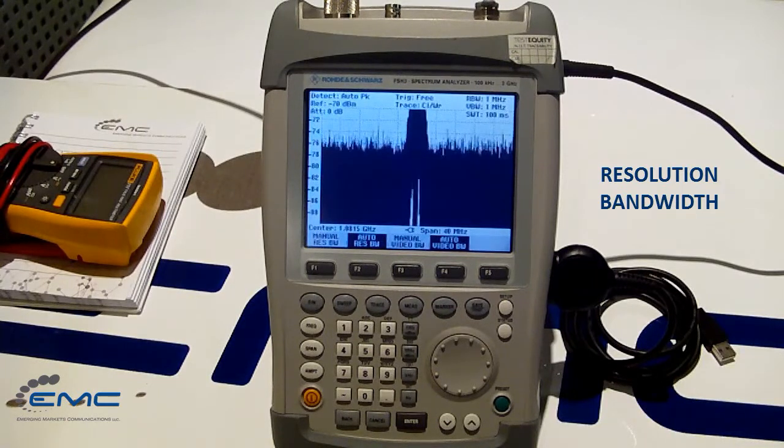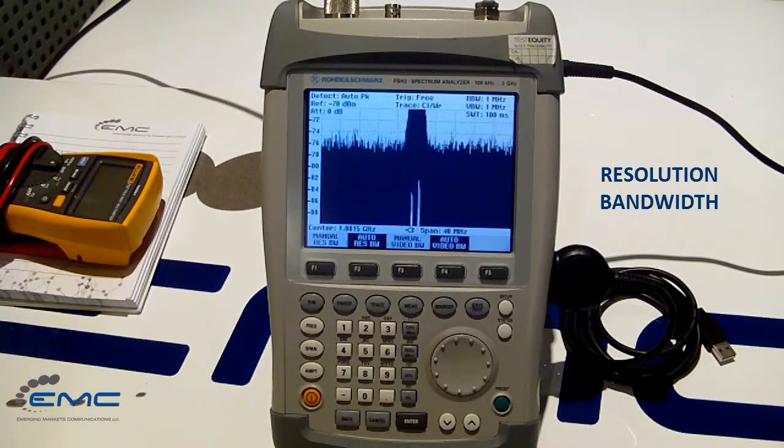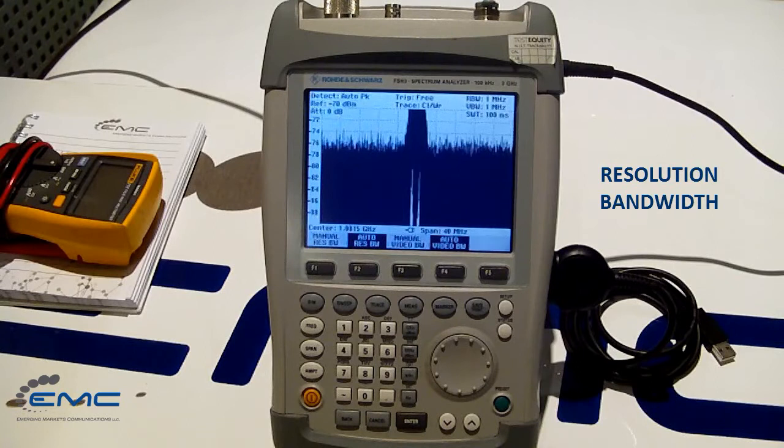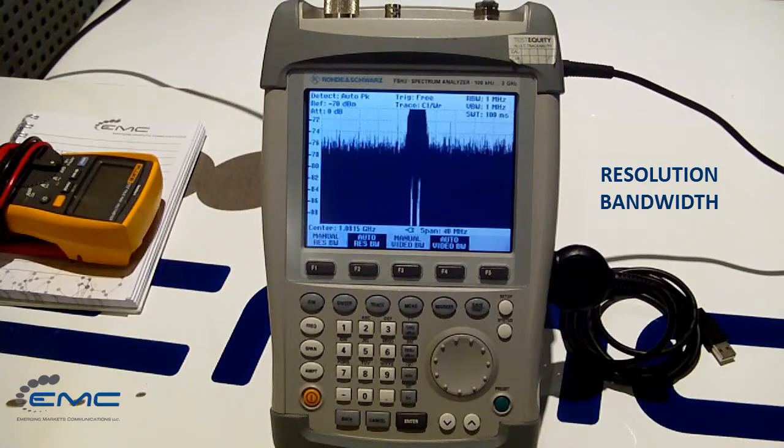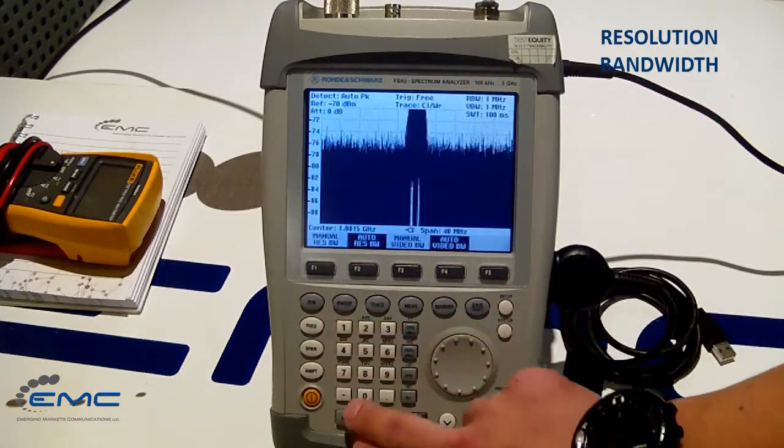Resolution bandwidth basically shows you how many samples you have, or how many times the span is divided. If we change the resolution bandwidth by a factor of 10, the displayed noise level changes by 10 dB. So to get better sensitivity, let's play with it. I'm going to set it to 100 kHz.